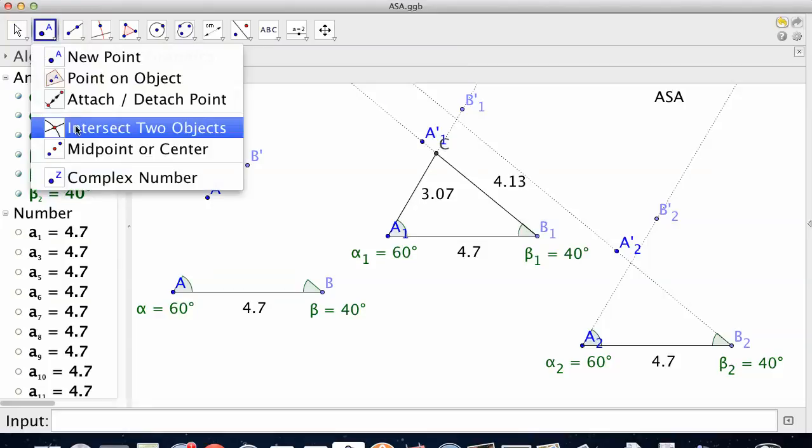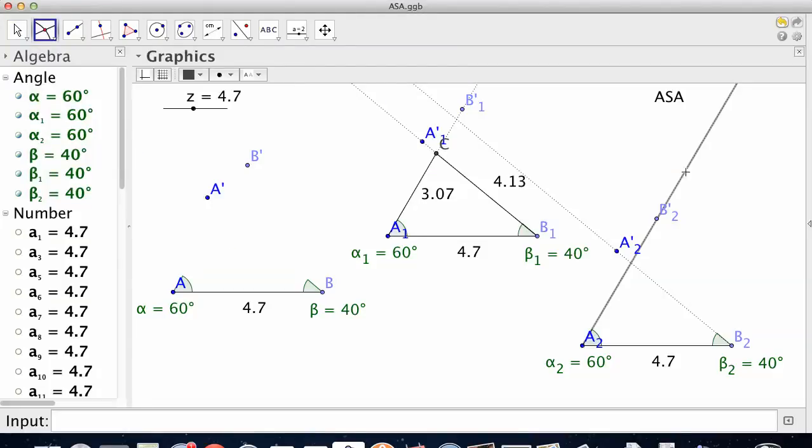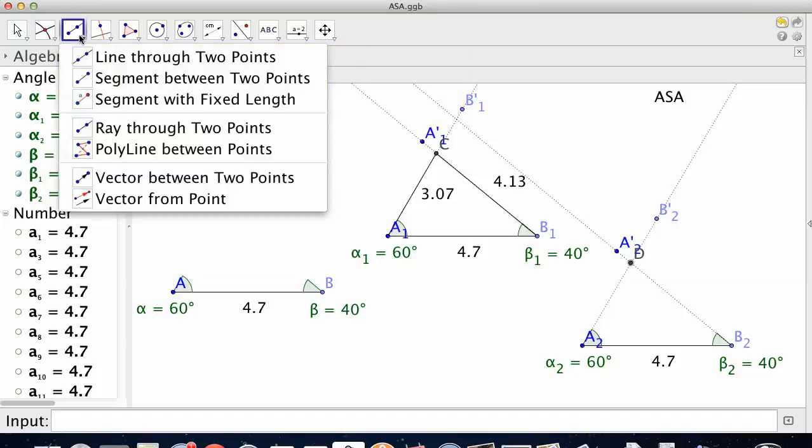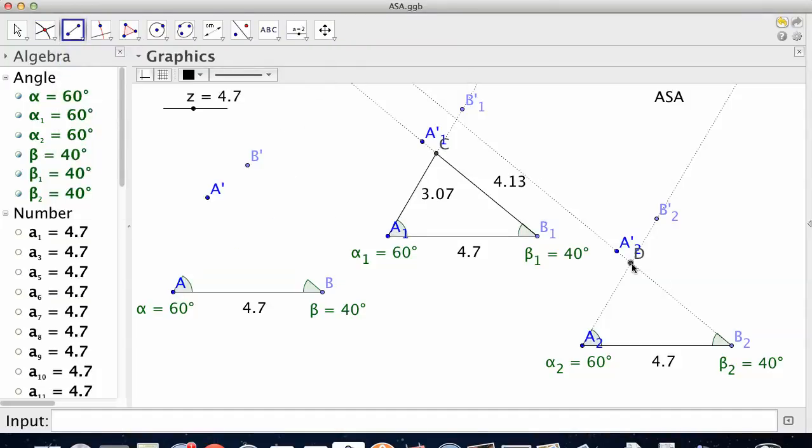So now I need to find the intersection of those two rays because that's where the corner's got to be, and make my segments, finish my triangle. So what do you think? Same triangle? Not same triangle? We'll measure just to prove it, verify.